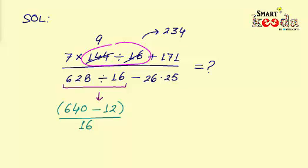Now can you observe what we did here? The idea here is to split the numerator part in such a way that we at least get some multiple of denominator to make the calculation easier. So here 640 is a multiple of 16. And to balance the equation, we had to subtract 12 from 640.